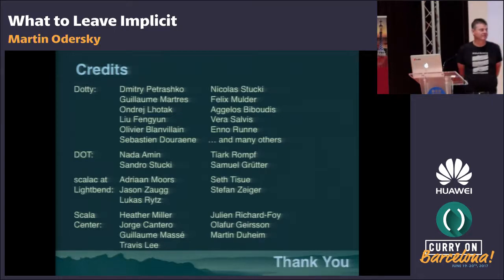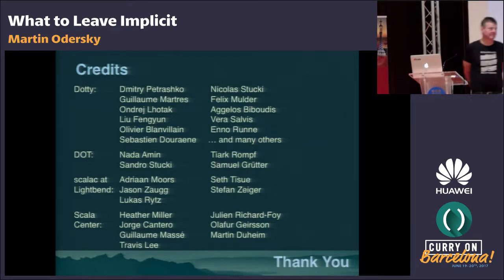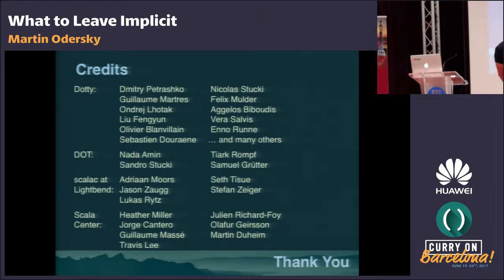Question from the audience: one obvious danger of this mechanism is that it requires programmers to think about the execution of the type checker in their head in order to understand what the program will do. The implicit arrow introduction rule and the stitch rule seem to allow an arbitrary number of implicit invocations for any particular syntactic location. Do you have ideas about how to conceptually bound the complexity you need to handle?